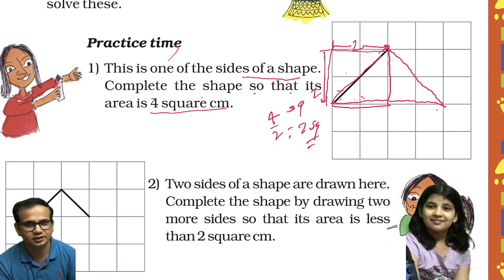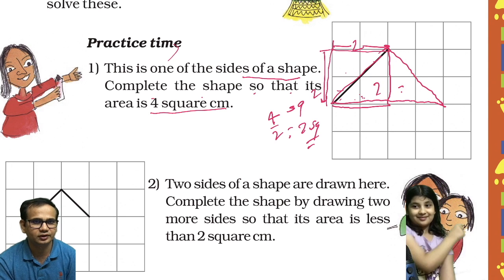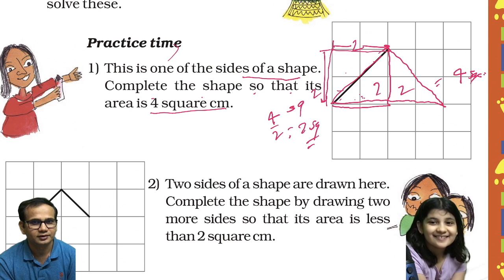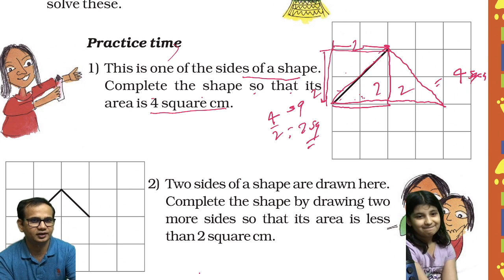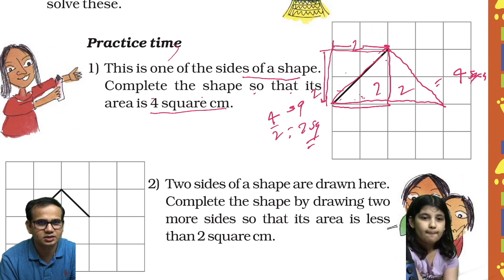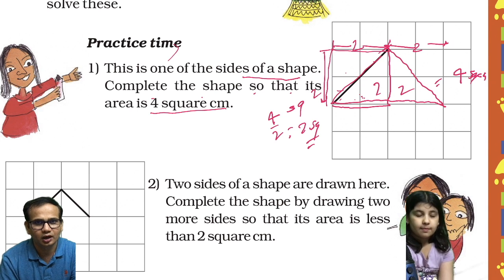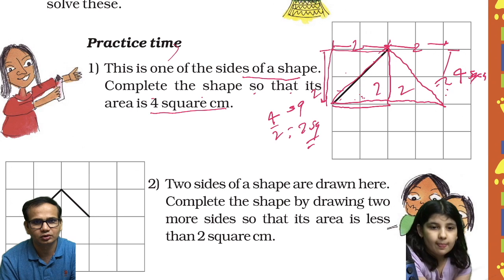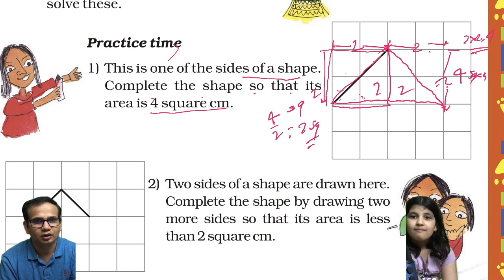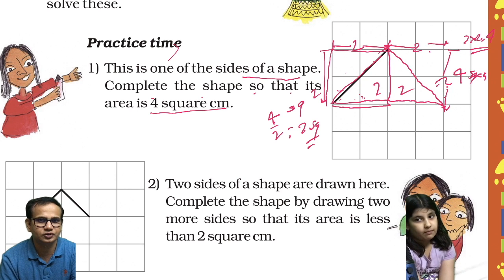That's also fine — two this one, two this one, total four. You have done nicely, Visha, you have learned it. Because this is two here, and this also two — two into two is four, and half of four is two. You got it this way!